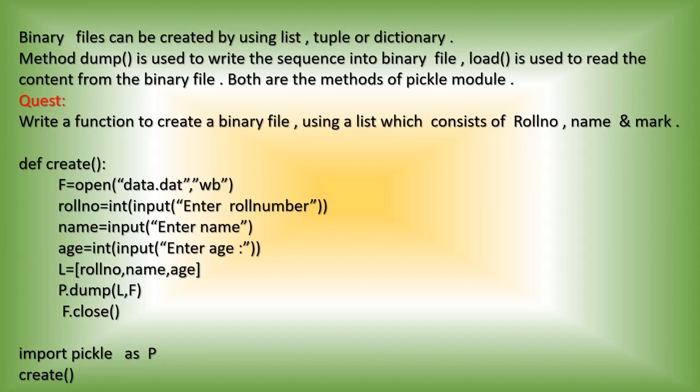Now we can create a binary file. There is a question: write a function to create a binary file using a list. You have to use a list consisting of role number, name, and marks. You have to accept the role number, name, and marks from the user, form a list, and write that list into the binary file.